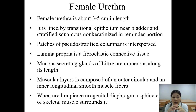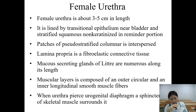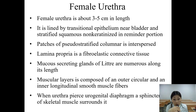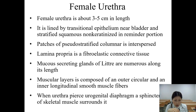The female urethra is about 3 to 5 centimeters in length. It is lined by transitional epithelium near the bladder and stratified squamous non-keratinized epithelium in the remainder of its length, with patches of pseudostratified columnar epithelium interspersed. The lamina propria is a fibroelastic connective tissue. Mucus-secreting glands of Littre are numerous along its length. The muscular layer is composed of an outer circular and inner longitudinal smooth muscle fibers. Where the urethra passes through the urogenital diaphragm, a sphincter of skeletal muscle surrounds it, allowing voluntary control of urination.